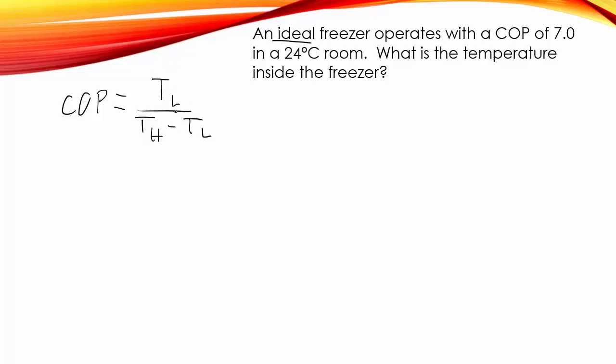But we can go ahead and plug in some numbers, rearrange things a bit, and solve for TL. Coefficient of performance is given, 7.0. TL is our unknown. TH is 24, and we have to make sure and convert these guys to Kelvins. So, plus 273. That whole thing is my TH minus the TL on top.